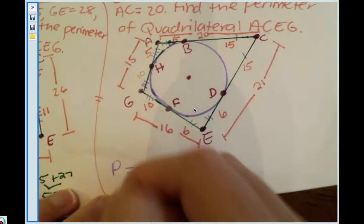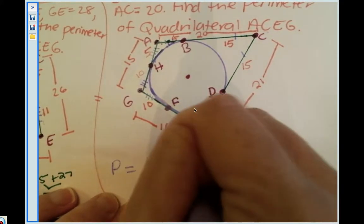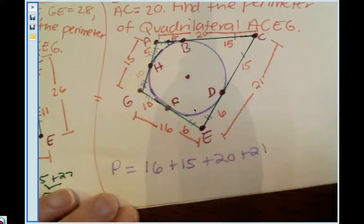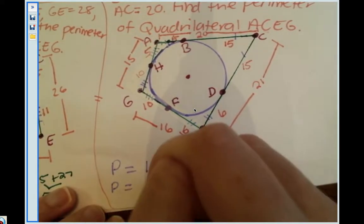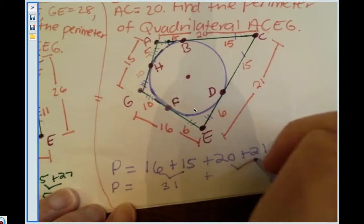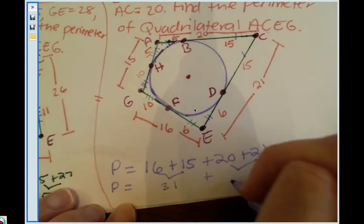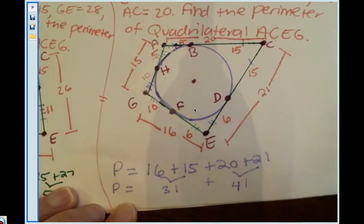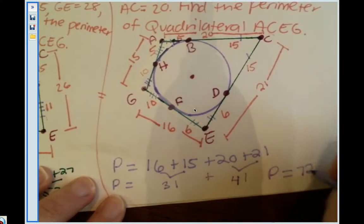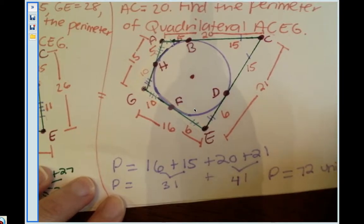We have 16 plus 15 plus 20 plus 21. 16 and 15 will give me 31, plus 20 and 21 will give me 41, and 31 plus 41 will give me 72.